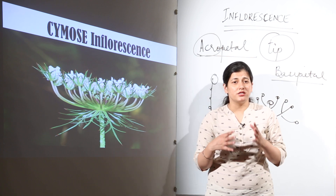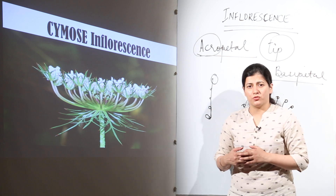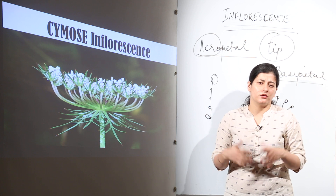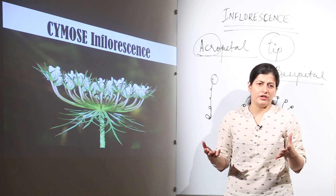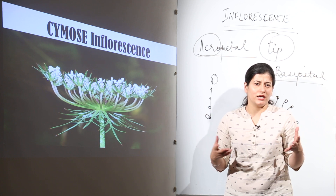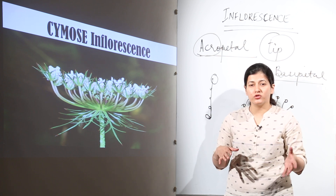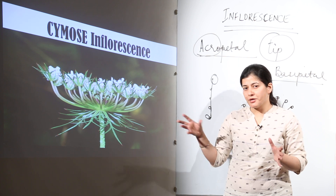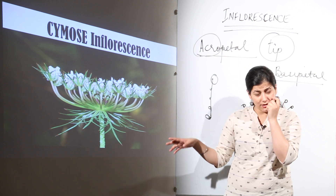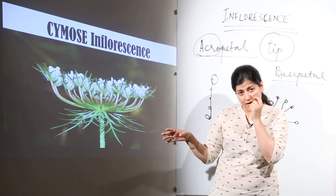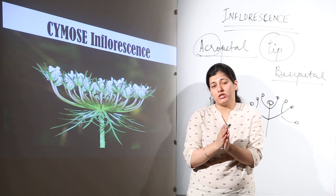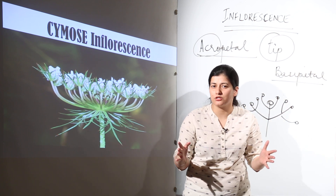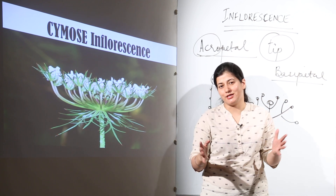I would suggest you practically learn this topic by going out into a field and seeing examples of racimose and cymose inflorescence. Don't get into the details of the eight different types shown in the previous slide — just concentrate on cymose and racimose, and you will be done with this topic in great depth.